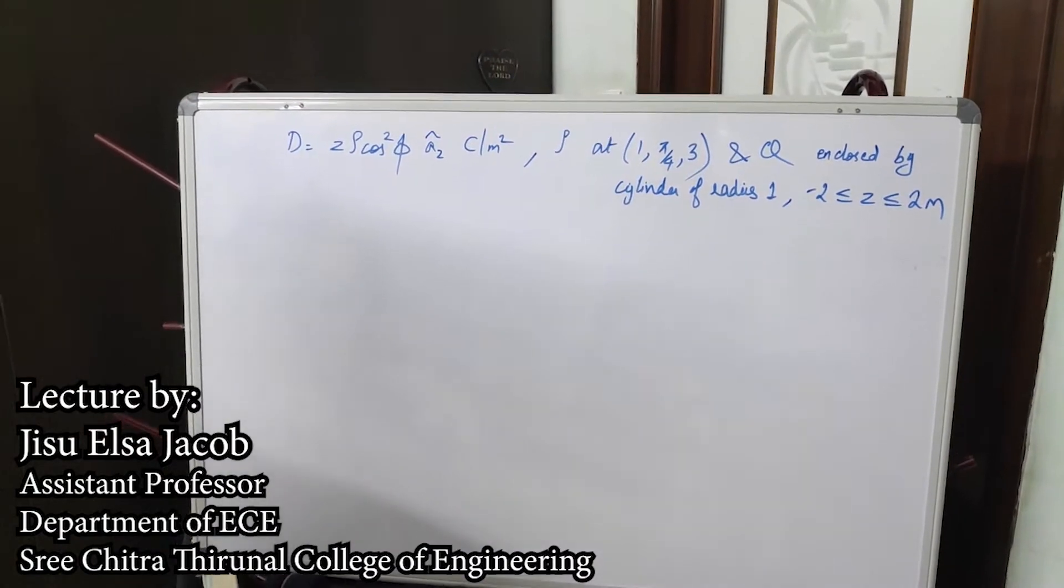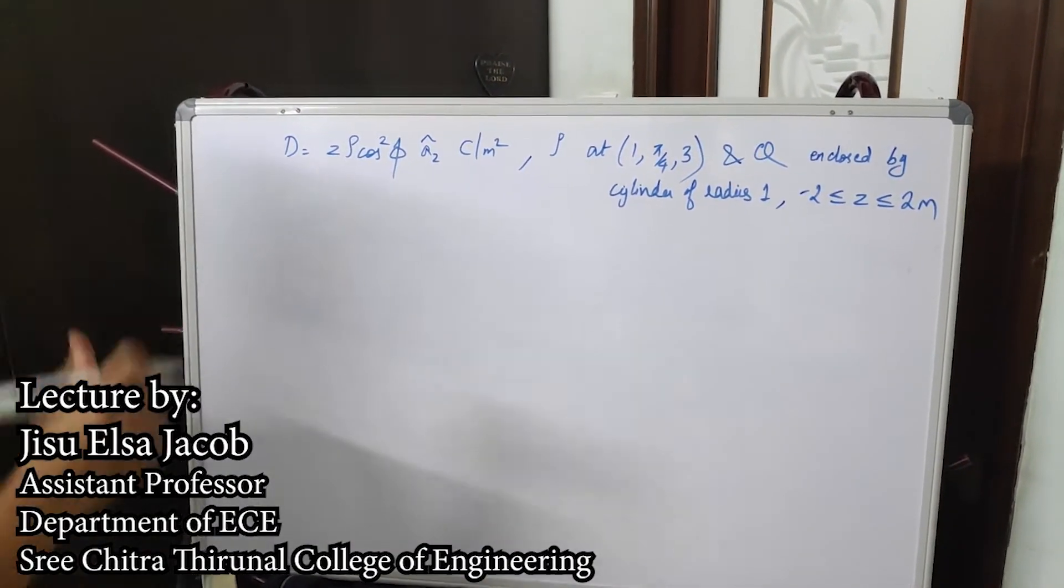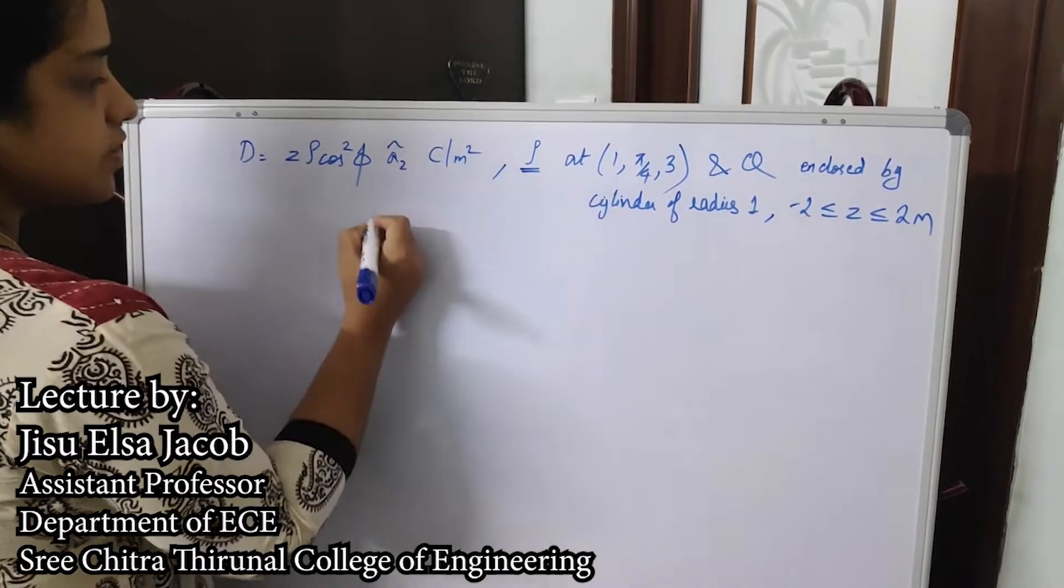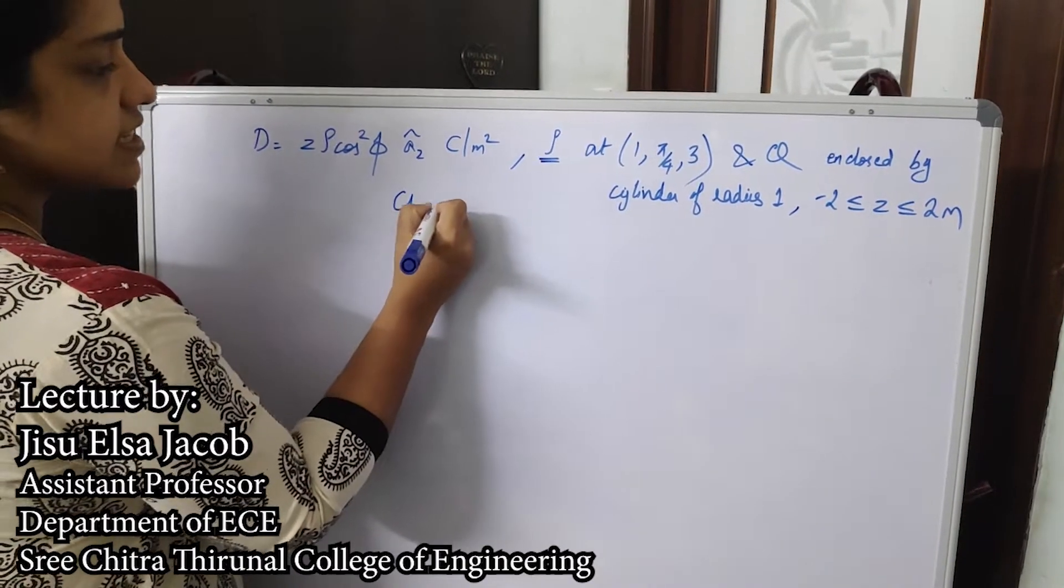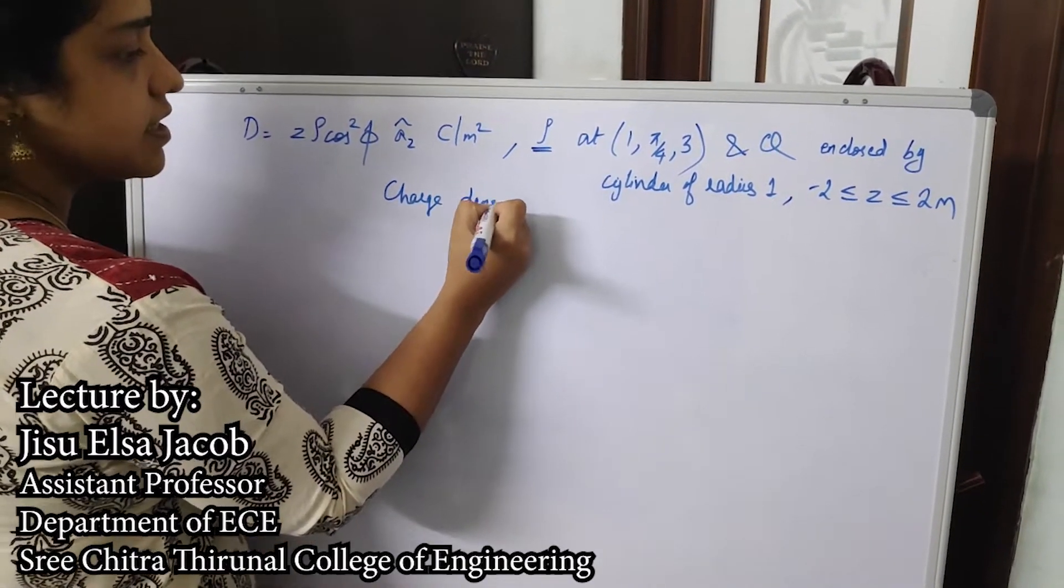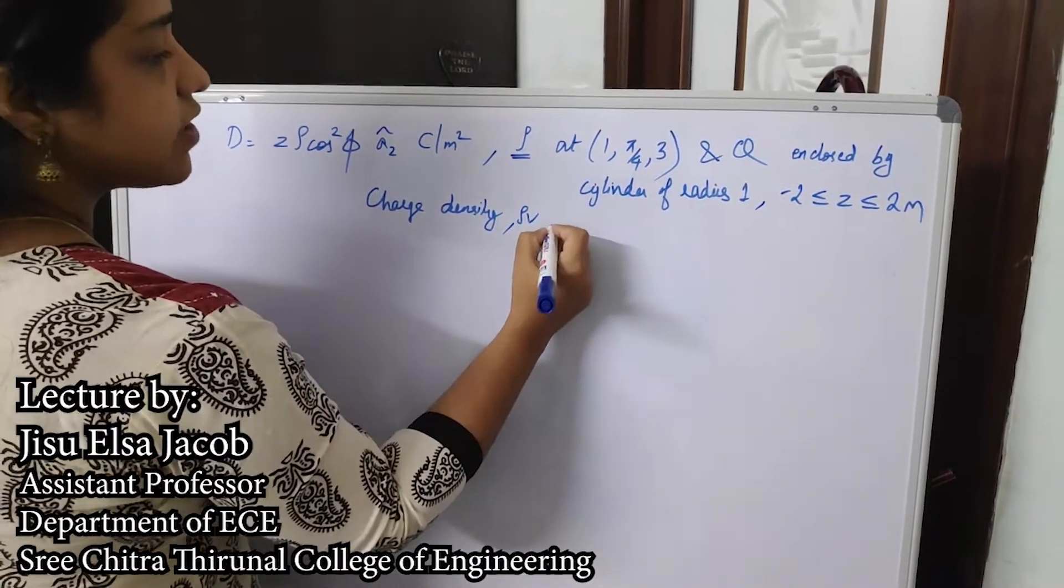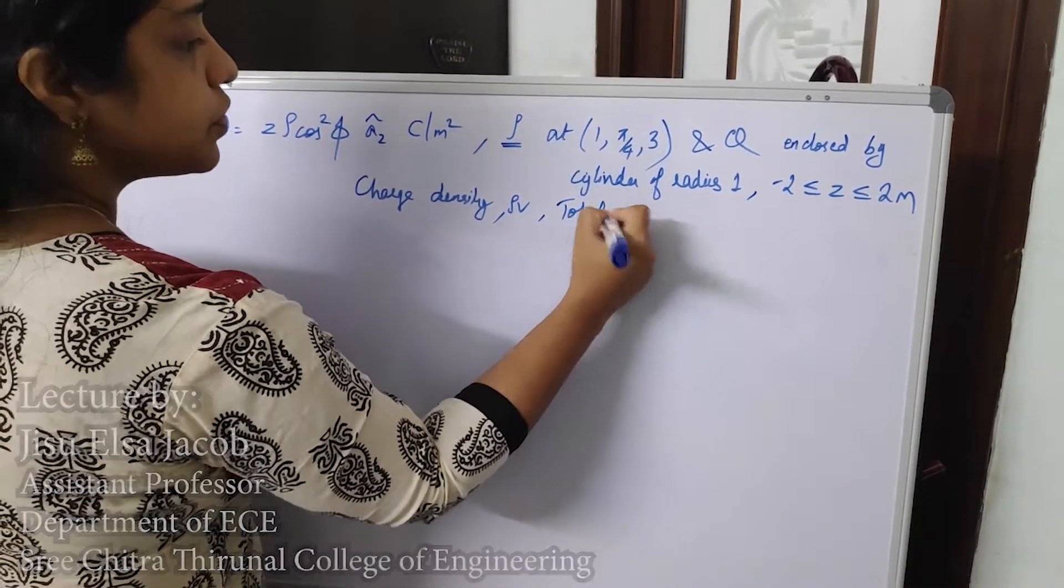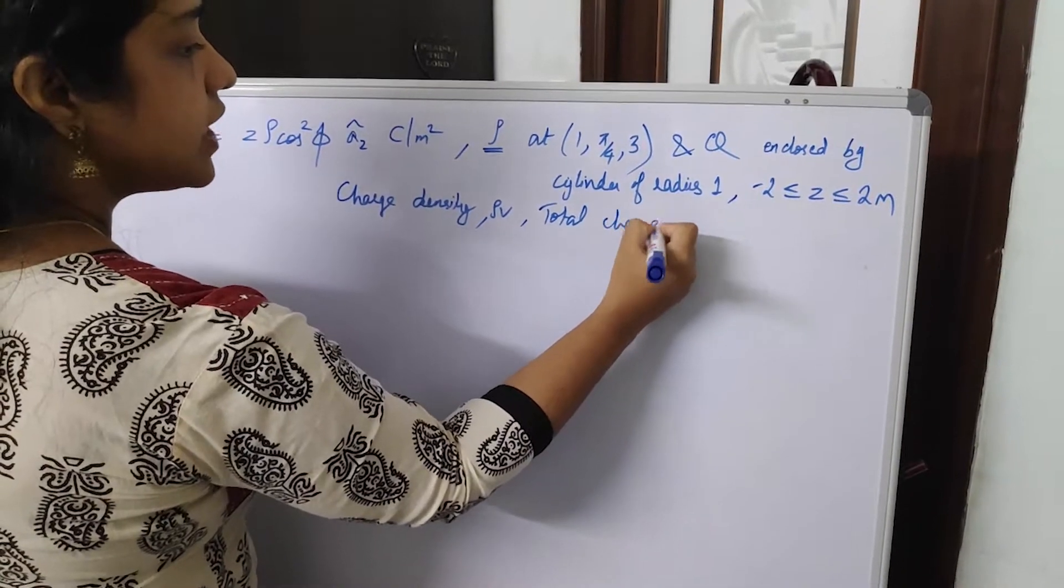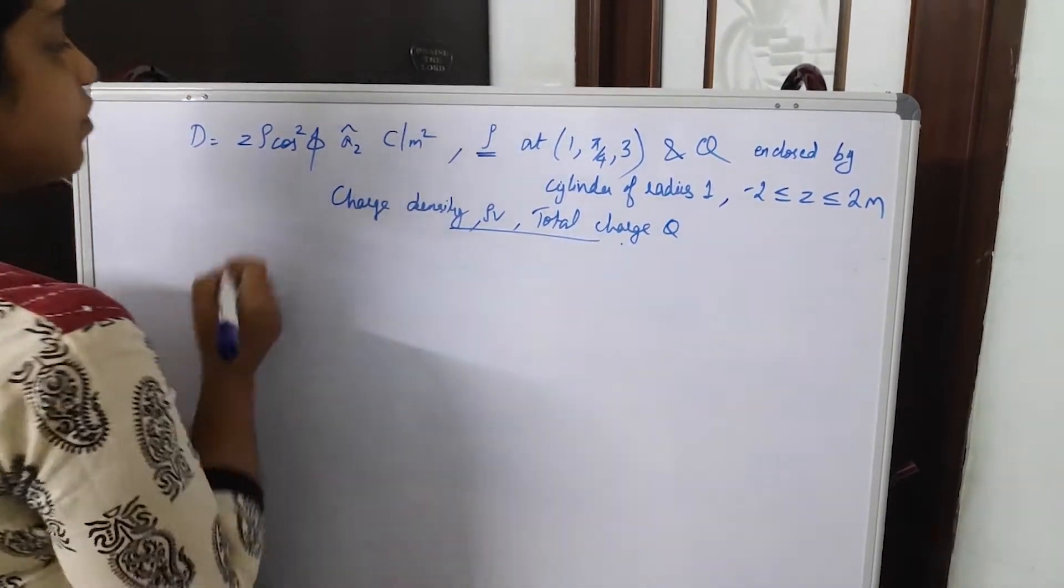Here in this problem you are asked to find rho, that means you are asked to calculate charge density, which is given by rho V. And then you are asked to calculate the total charge Q. So you have to calculate these two values. And what is given?